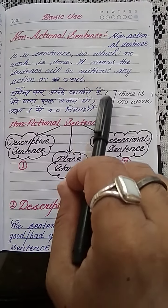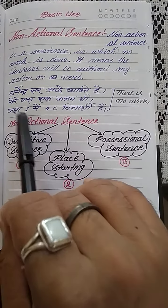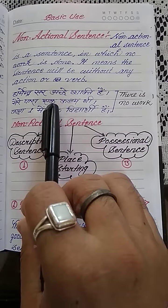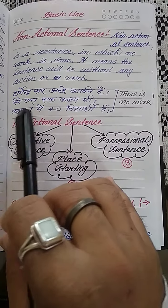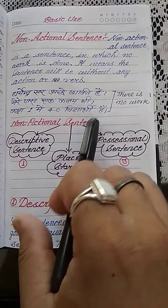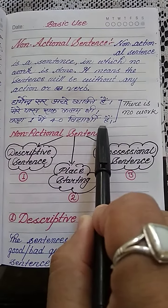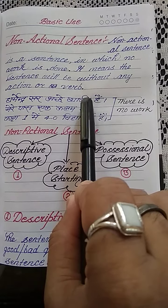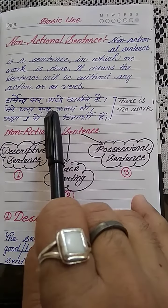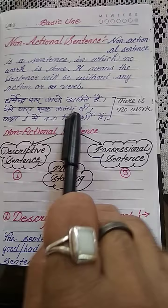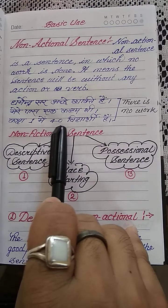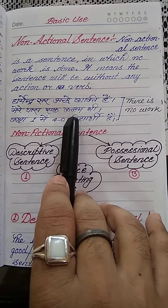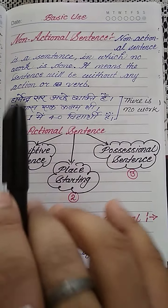Look at the three sentences I have taken to explain this: 'Dharmeen sir achche vyakti hai,' 'Mere paas ek kalam thi,' 'Kaksha ek mein 40 vidyarthi hain.' These three sentences tell you that there is no work in the first sentence, no work is found in the second sentence, and the same thing applies to the third sentence — there is no work.